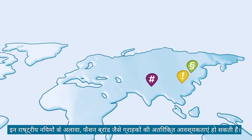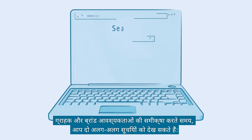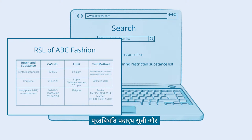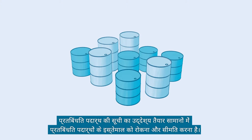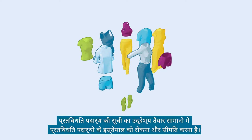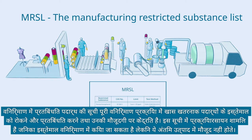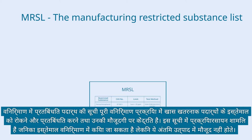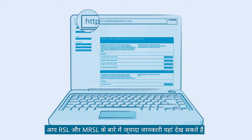In addition to national regulations, customers such as fashion brands may have further requirements. While reviewing customer and brand requirements, you may come across two different lists: the Restricted Substance List and the Manufacturing Restricted Substance List. The RSL aims to prevent and limit the use of restricted substances in finished products. The MRSL focuses on preventing and restricting the usage of specific hazardous substances throughout the entire manufacturing process, including processed chemicals not present in the end product. You can find more detailed information on RSL and MRSL here.